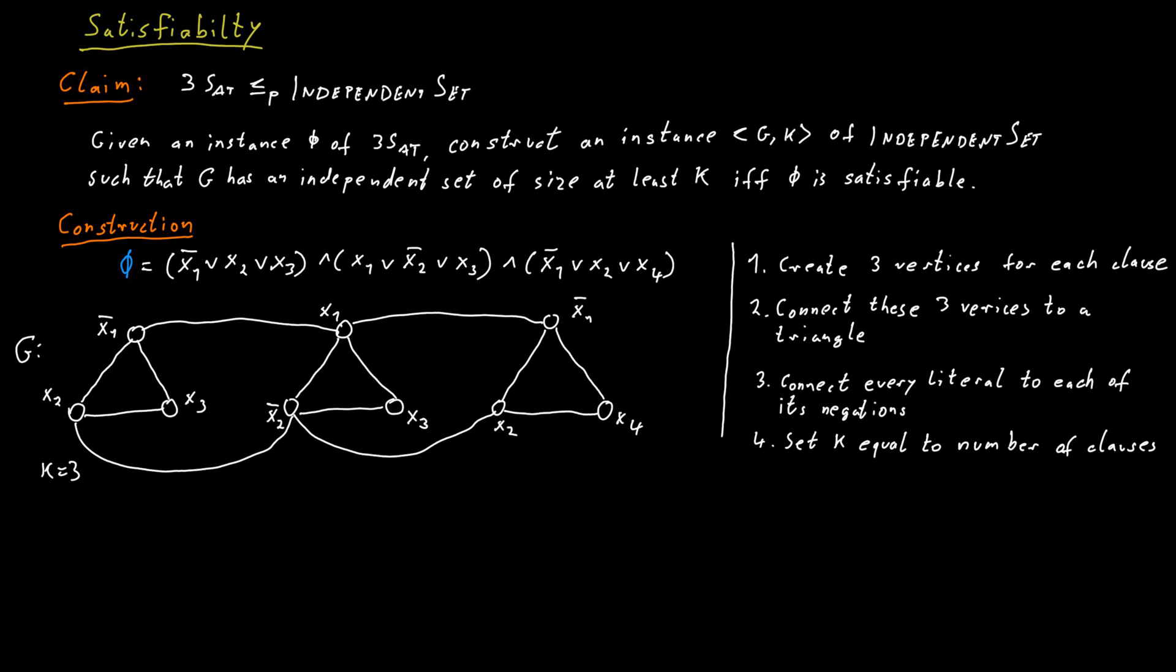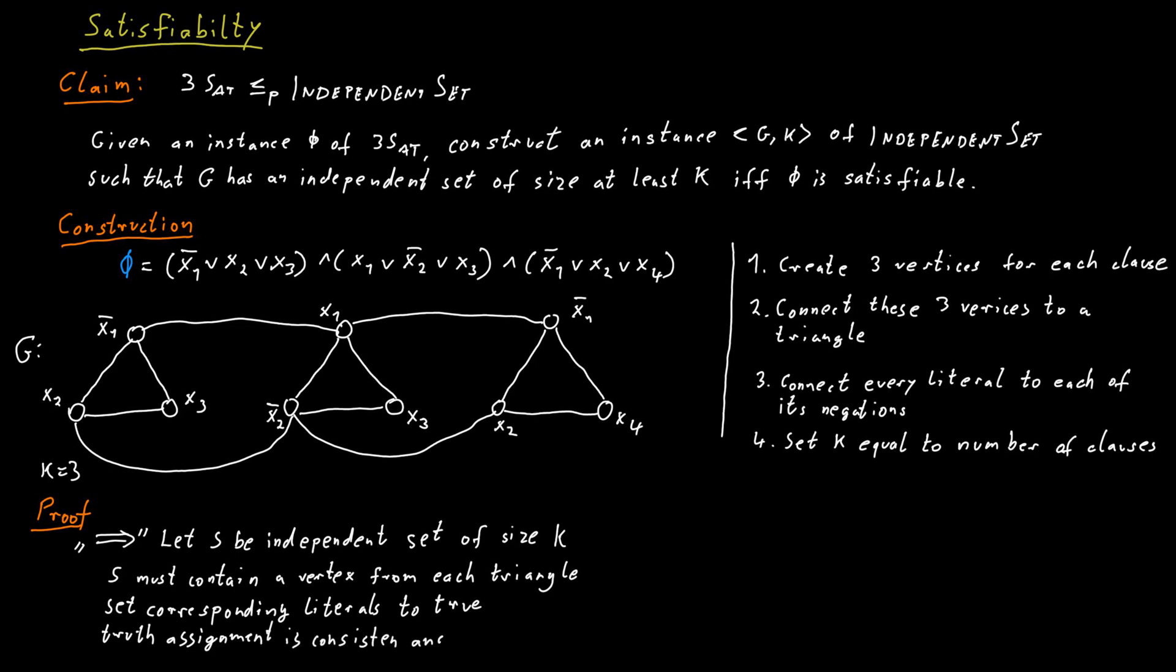So now let's argue a little bit more formally. Let s be an independent set of size k in our constructed graph. As I said, s must contain exactly one vertex in each triangle because there are k triangles. Those vertices correspond to some literals. If we select a vertex, we set the corresponding literal to true. So this ensures that we have a satisfying assignment because indeed every clause now contains a true literal.